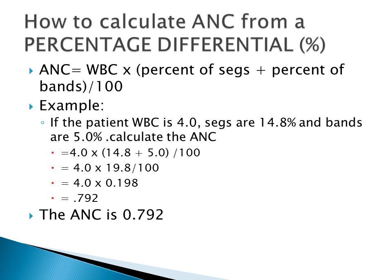Here is an example of how to calculate absolute neutrophil count from a percentage differentiation. The formula is: WBC times (percentage of SEGs plus percentage of bands — the young neutrophils) divided by 100. For a patient with a WBC of 4.0, SEGs of 14.8, and bands of 5.0, you add 14.8 plus 5.0 to get 19.8. When you multiply, you get the absolute neutrophil count as 0.792.